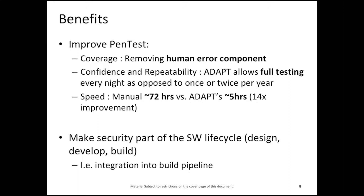We can improve pen test efforts in three ways. First, we increase coverage by removing the human error component. Second, we improve confidence and repeatability — since ADAPT increases speed tremendously, we can perform full pen testing every night as opposed to once or twice per year. Third, there is the speed benefit: a manual pen test takes about 72 engineering hours — typically two to three people for two to three days — whereas ADAPT for a medium-sized application takes about five hours, roughly a 14-times increase.